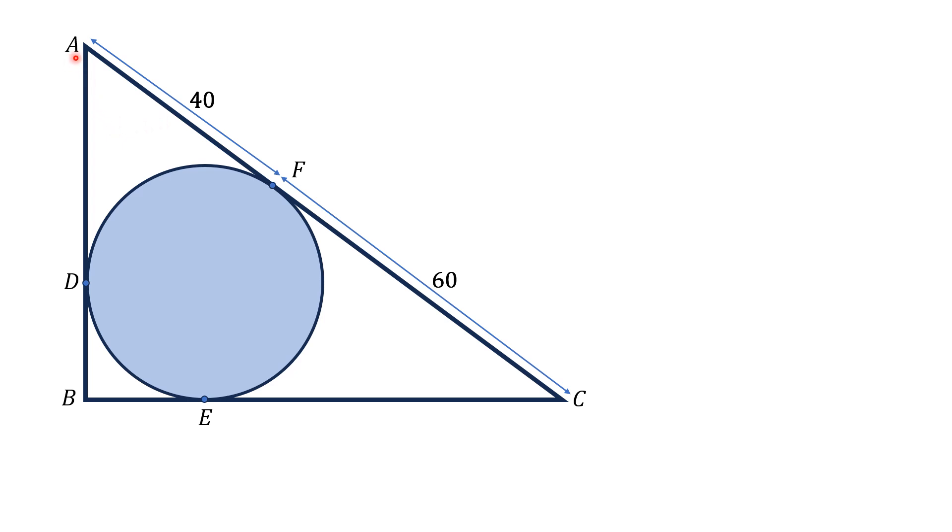So, if we draw two tangents from point A, which are AF and AD, then by this rule, AF will be equal to AD. Thus, since AF is 40 units, AD will also be 40 units.